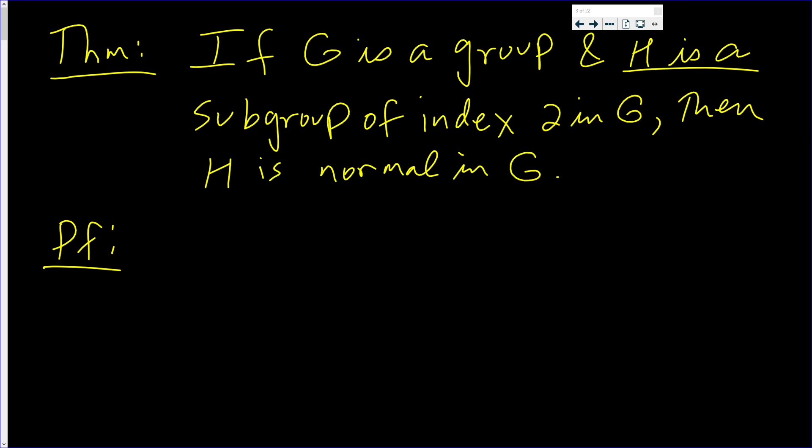So what does it mean when one says that H is a subgroup of index 2 in G? We know what it means for H to be a subgroup of G. What does it mean to be of index 2 in G?